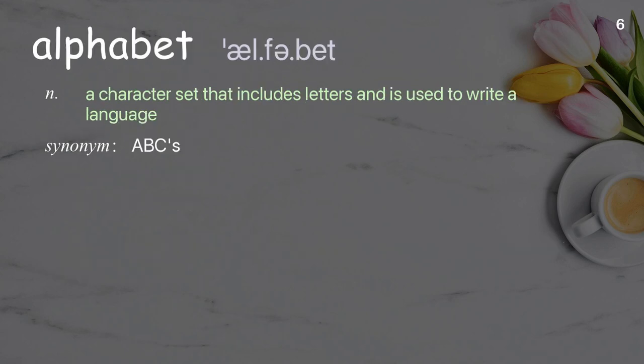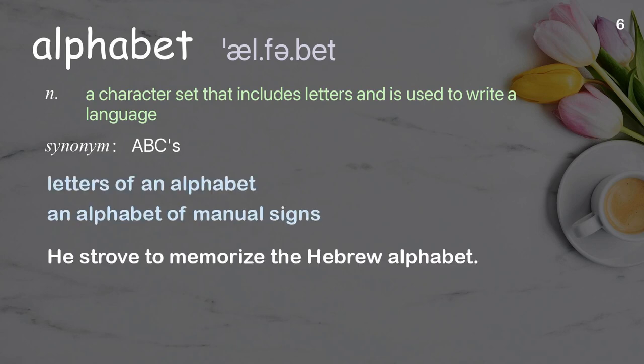Alphabet: a character set that includes letters and is used to write a language. Examples: letters of an alphabet, an alphabet of manual signs. He strove to memorize the Hebrew alphabet.